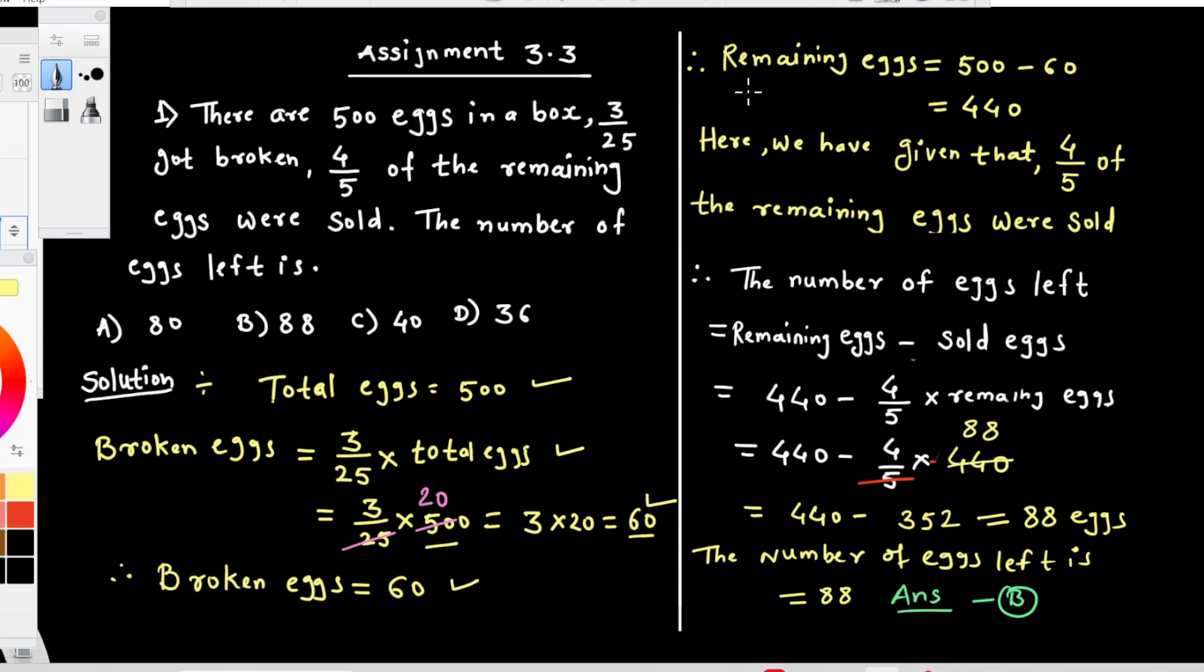Here, remaining eggs is equal to 500 minus 60 is equal to 440. And again, 4/5 of the remaining eggs were sold.